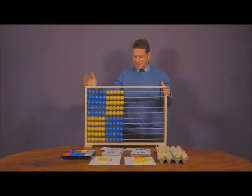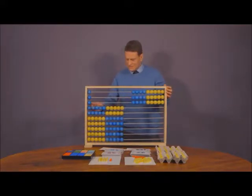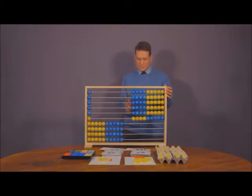So here is nine times six. I've got nine, it's my multiplicand, being multiplied by my multiplier six times. So nine times six. And you can see I've got nine multiplied by six.